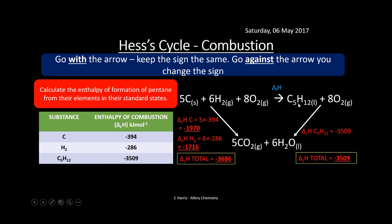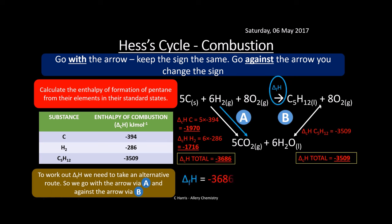We want to work out the enthalpy of formation — imagine it like a roadblock, and we take a diversion: we go down here and then up here. Going with the arrow on one side: minus 3686, keep the sign. Going against the arrow to our products: we change the sign, so it's plus 3509. Put that in the calculator: we get minus 177 kilojoules per mole. This reaction is exothermic.